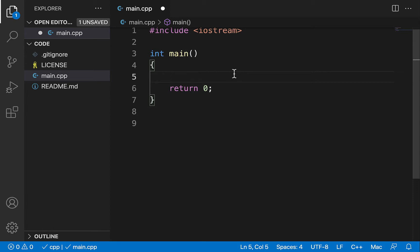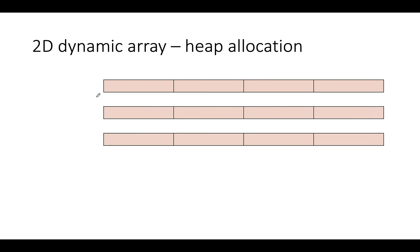Let's say I would like to create a three by four array of integers on the heap dynamically. One way to think of a three by four integer array is that it basically consists of three single-dimensional arrays. The first single-dimensional array has four elements to represent the first row, the second represents the second row, and the third represents the third row.